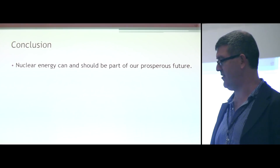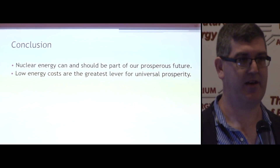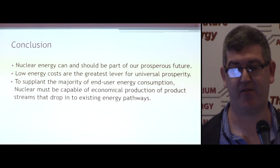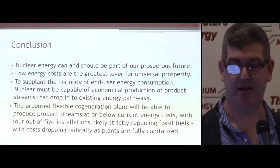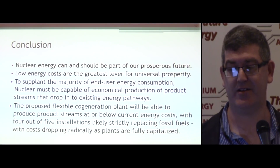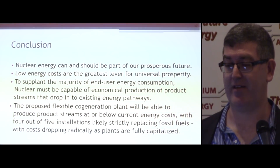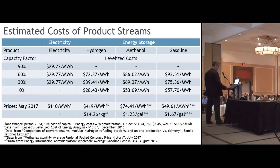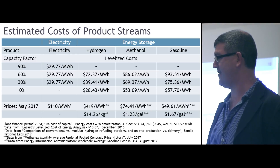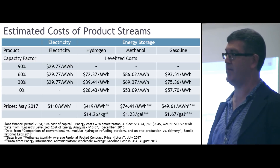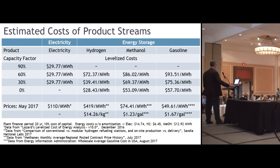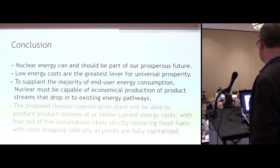Nuclear can and should be a part of our prosperous future. We want the lowest energy cost possible for all applications and universal prosperity. To supplant the majority of end-use energy consumption, nuclear must be capable of economic production of product streams that drop in to many energy pathways today. This proposed flexible cogeneration plant will be able to produce product streams at or below current energy costs, with four out of five installations likely strictly replacing fossil fuels. The costs drop radically as the plants are fully capitalized — electricity at $14 per megawatt hour, hydrogen at $6 per megawatt hour, and methanol at $12 per megawatt hour. These are fractions of what we're paying today, and it only takes 20 years to pay off even these conservative assessments.